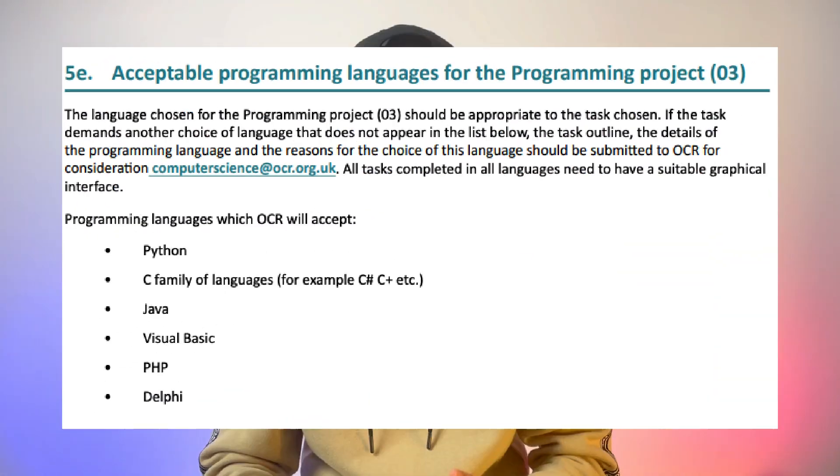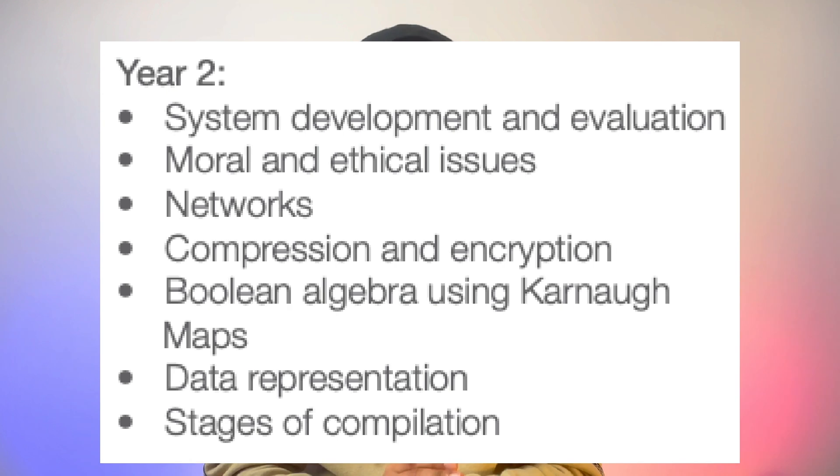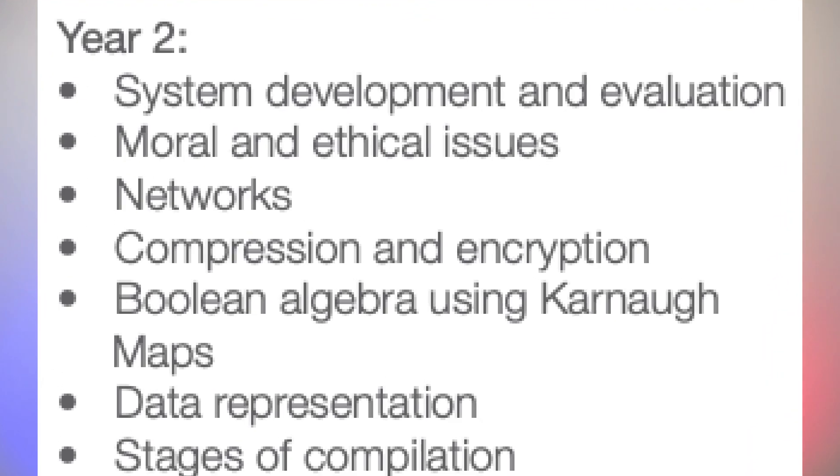The remaining 20% comes from the programming project — this is any project that you want to create using one of the programming languages that OCR recommend. This project typically starts at the end of year 12, and over that summer you need to be preparing for it; it ends in April just before exams begin. In year one you'll typically cover core topics, and for web technologies you'll need to learn HTML, CSS, and JavaScript.